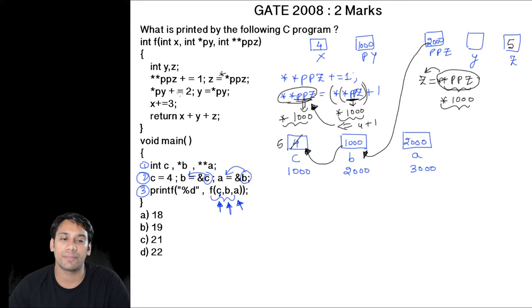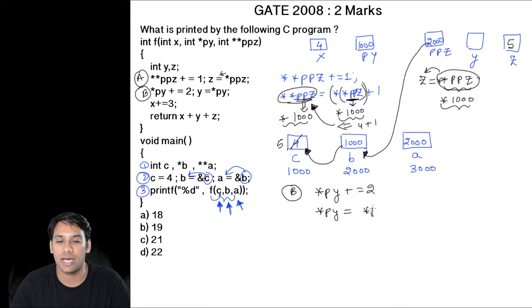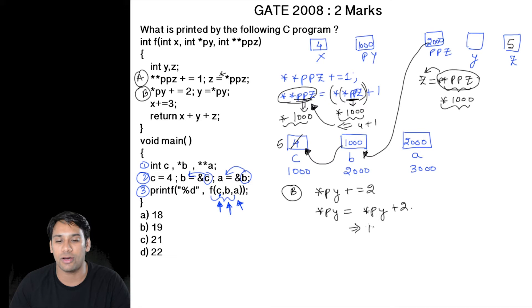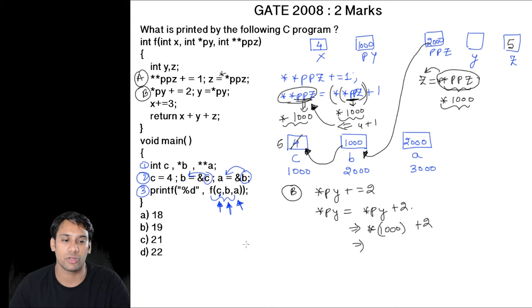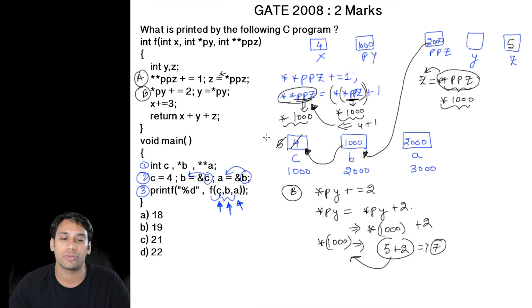The next statement is *py += 2, which can be written as *py = *py + 2. Since py points to location 1000, this becomes *(1000) = *(1000) + 2. The value at location 1000 is 5, so 5 + 2 = 7. Therefore, 7 will be stored at location 1000, updating the value of c to 7.